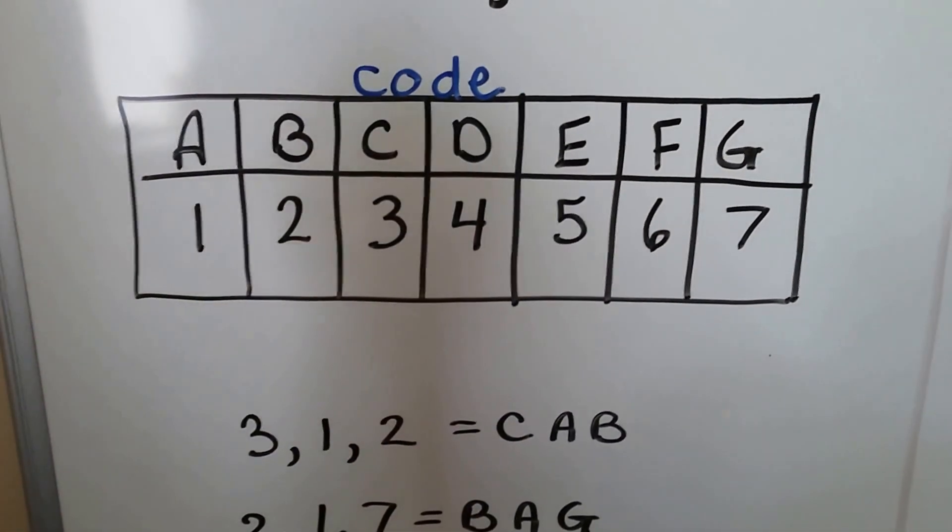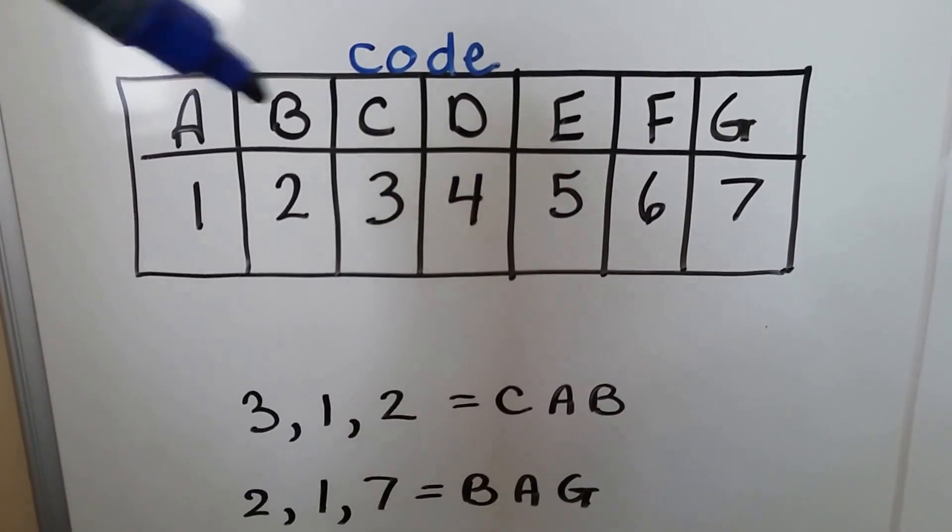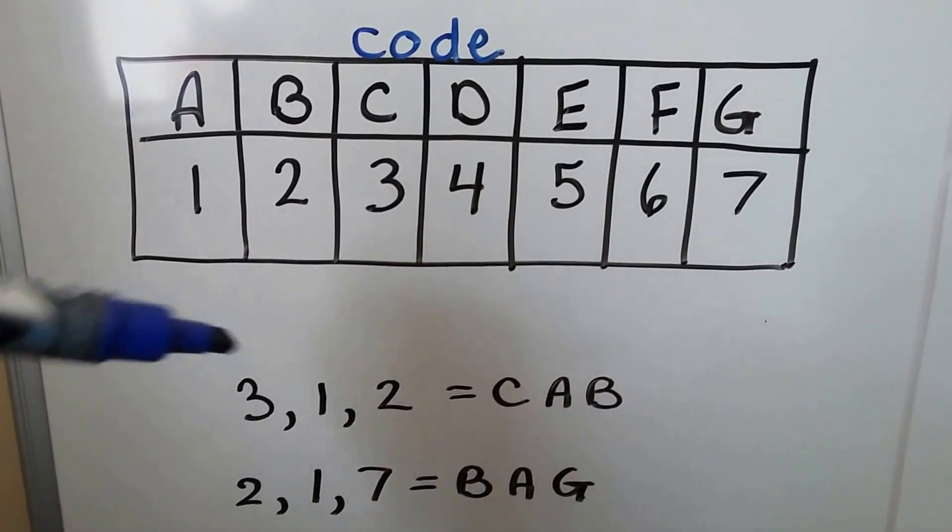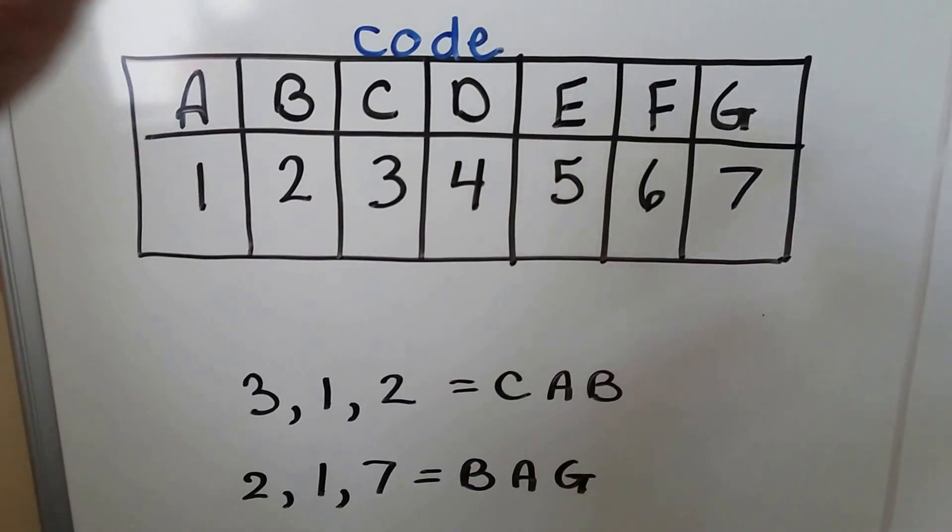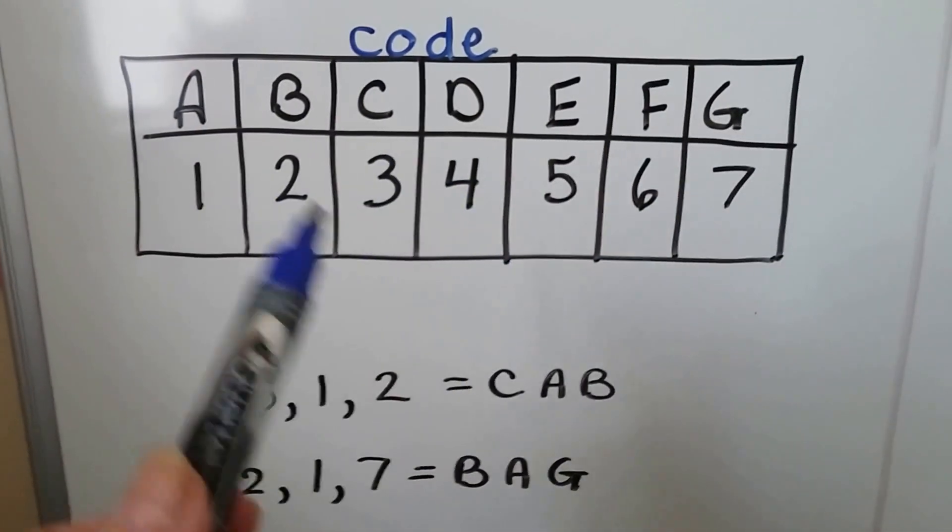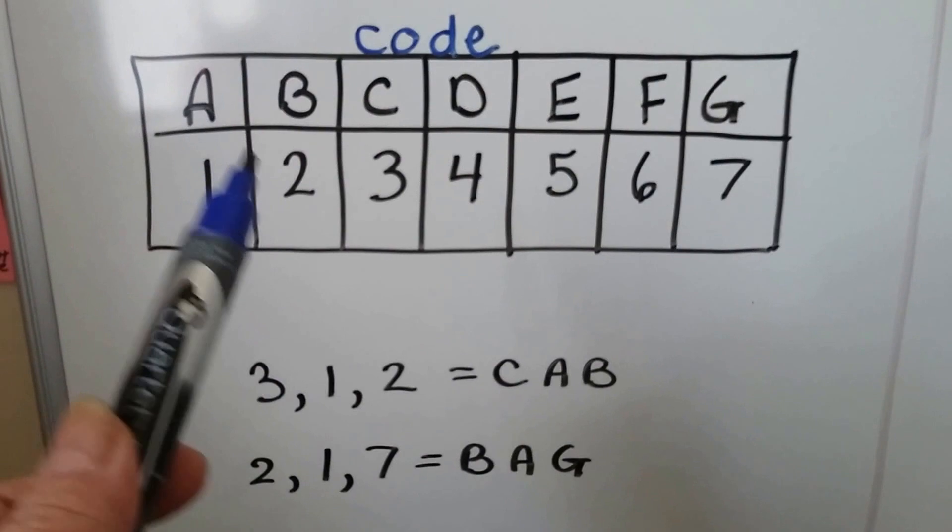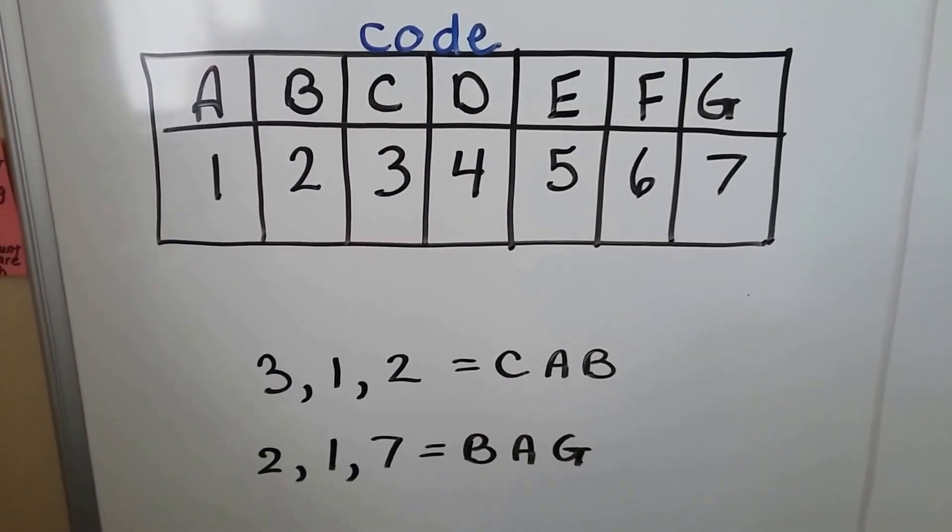We can spell the word cab, C, A, B with 3, 1, 2. We can spell the word bag with 2, 1, 7. And if someone has a copy of the code chart, they'll be able to find the secret message you wrote.